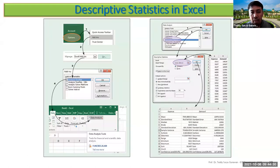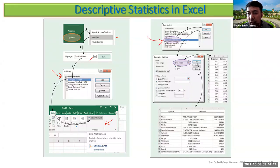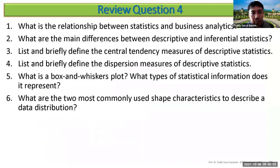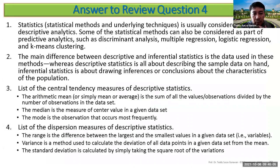Descriptive statistics can be done in Excel. Go to Options → Add-ins → Analysis ToolPak → Data Analysis, and you can produce descriptive statistics including mean, standard error, median, and other measures. You can also produce box-and-whisker plots.